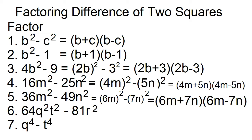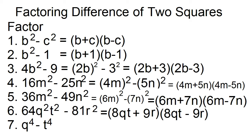Number six: factor 64q squared t squared minus 81r squared. The square root of 64 is 8, the square root of q squared is q, and the square root of t squared is t. The square root of 81 is 9, and the square root of r squared is r. The factors are 8qt plus 9r and 8qt minus 9r.